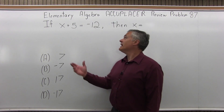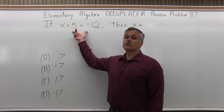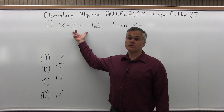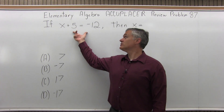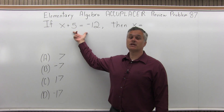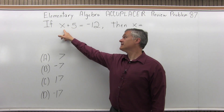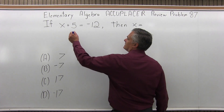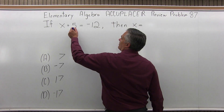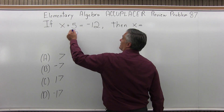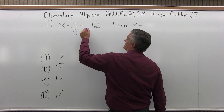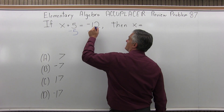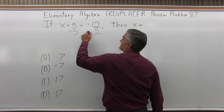What we have is an equation, and the rule in algebra is you can do anything you want as long as you do the same thing on both sides. Because I'd like to get the x by itself, I want to get rid of the 5. So I'll go minus 5 on the left side of the equals and minus 5 on the right side of the equals.